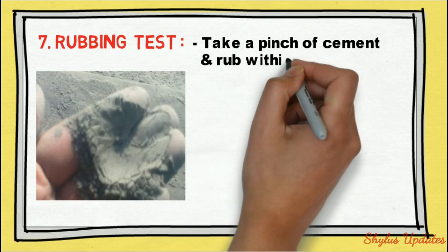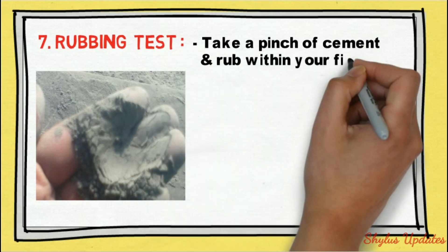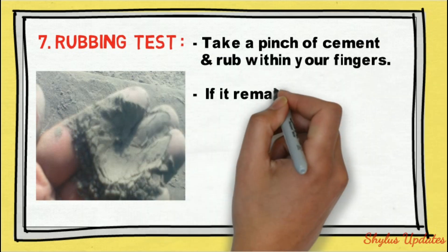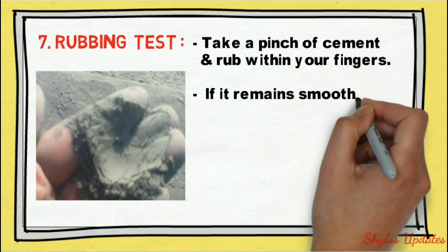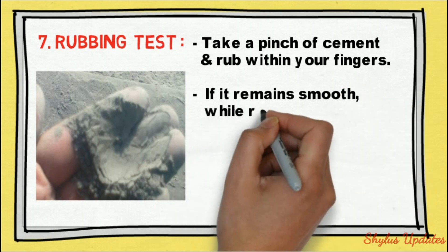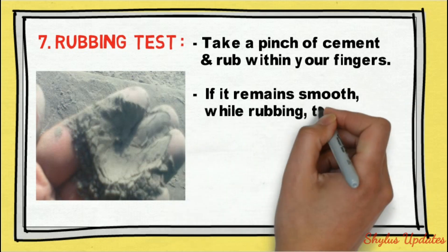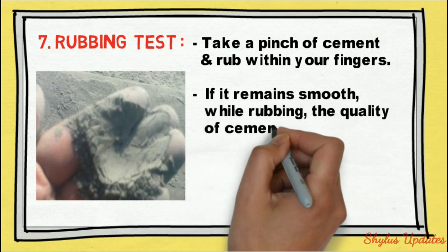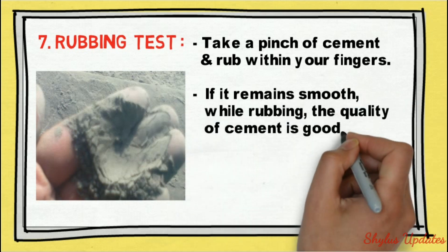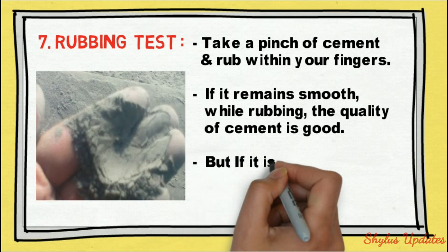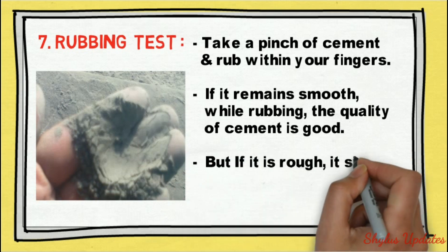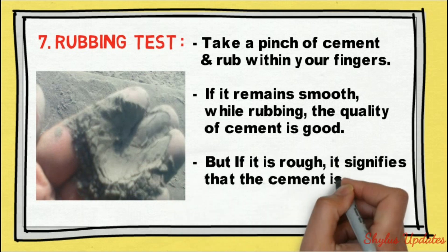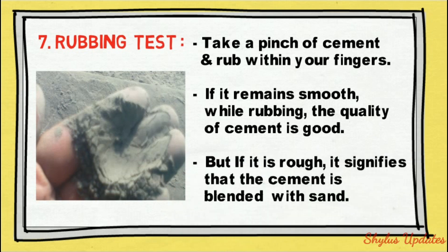Rubbing test: take a pinch of cement and rub it between your fingers. If it remains smooth while rubbing, the quality of cement is good. But if it feels rough, it signifies that the cement has been blended with sand.